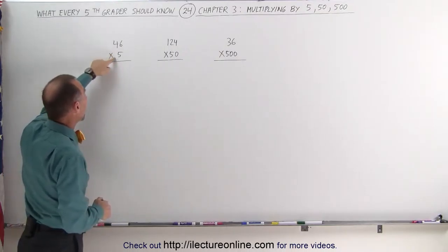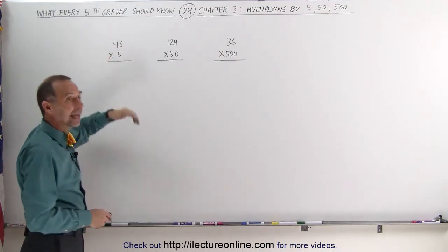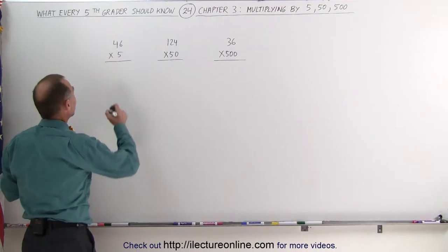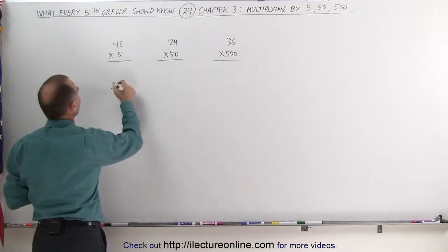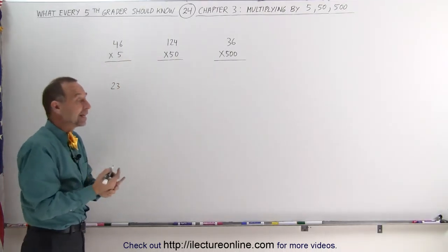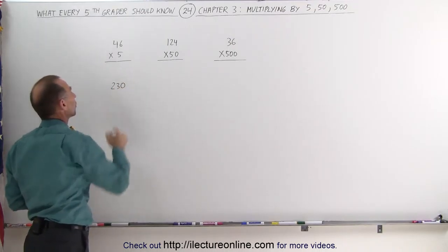So when you have 46 times 5, first take 46 and divide by 2. When you divide by 2, we get 23. Then add a zero because multiplying times 10 is like adding a zero. The answer is 230.